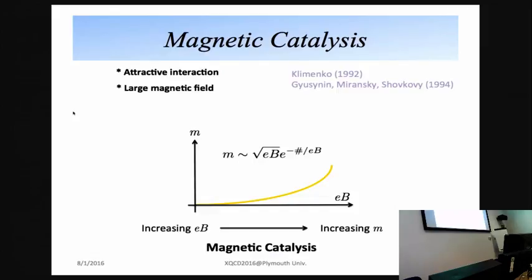Let me review the effect of the magnetic field on chiral symmetry breaking. Suppose you have an attractive interaction between quarks or fermions and also a large magnetic field. Then it drastically changes the structure of chiral symmetry breaking — namely, as the magnetic field increases, the dynamical mass is enhanced by the magnetic field, which is called magnetic catalysis.